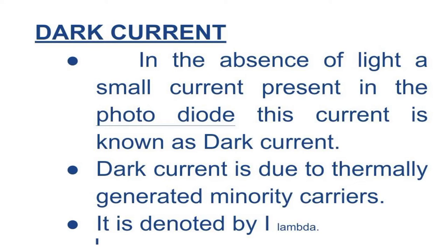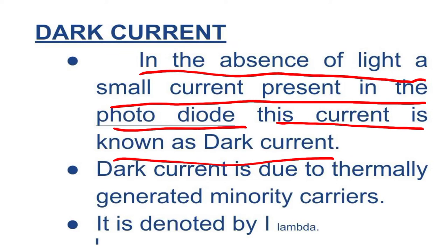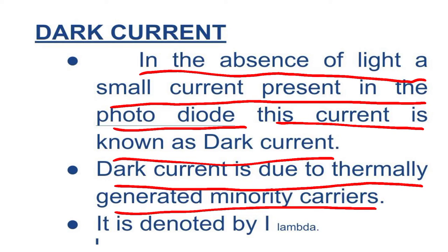In the absence of light, a small current is present in the photodiode — this current is known as dark current. Dark current is due to thermally generated minority carriers. It is denoted by I-lambda.